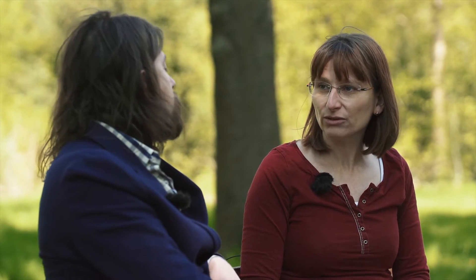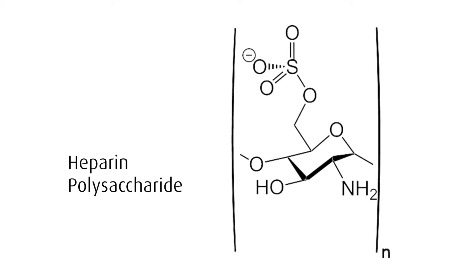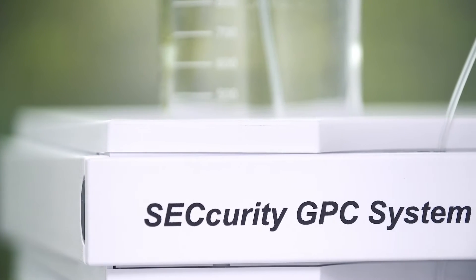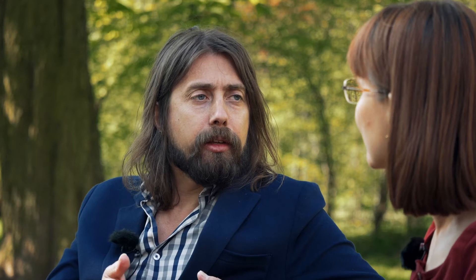Heparin is a macromolecule, and all macromolecules have a molecular weight distribution. Heparins are used in medicine, so we need very good quality control for these molecules. What we need to measure, especially for low molecular weight heparins, is the molecular weight distribution. There are criteria that the molecular weight average MW should be below 8,000 Dalton, and also many other parameters to ensure all fractions of the molecule meet the right molecular weight range.